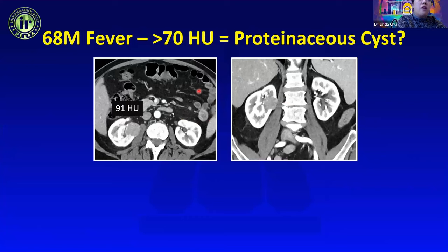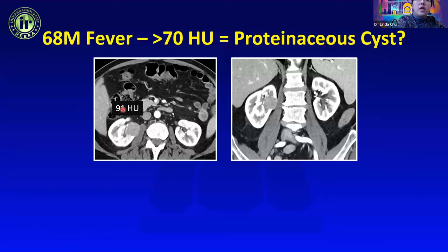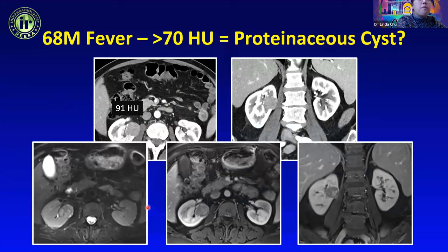A trainee made a similar mistake, seeing a 91 HU lesion on contrast-enhanced CT and assuming that since it was more than 70 HU it was a proteinaceous cyst. The problem is you don't know without a non-contrast phase whether it was a low-density lesion that enhanced or a lesion that remained at 90 HU on both pre- and post-contrast. We obtained an MRI showing heterogeneous T2 signal with enhancement — confirmed as chromophobe RCC.